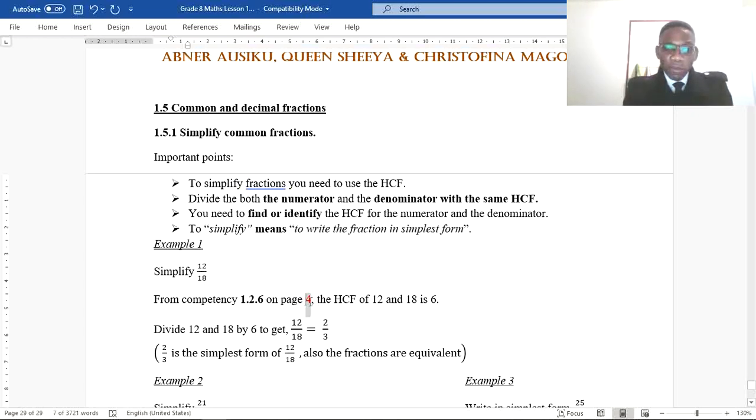This is example number one. Here we are given to simplify 12 over 18. On page number four of the study guide, the highest common factor of 12 and 18 is 6. So meaning that 6 is the highest common factor of 12 and 18.